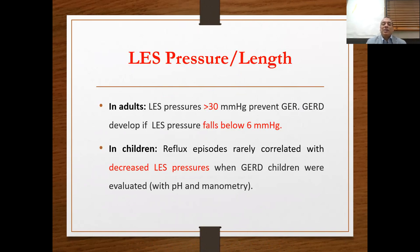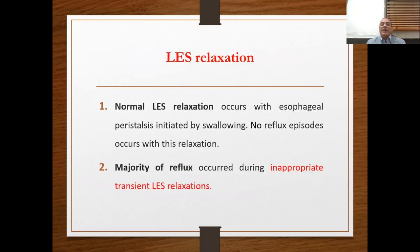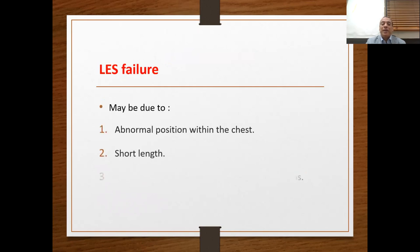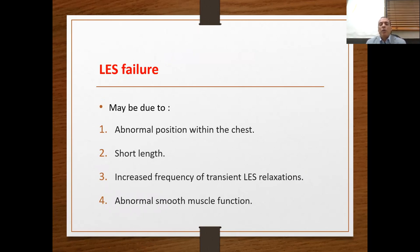Regarding LES pressure: in adults, pressure above 30 mmHg prevents reflux, while pressure below 6 mmHg causes reflux. In children, reflux episodes rarely correlate with decreased LES pressure on pH and manometry evaluation. Normal LES relaxation occurs with esophageal peristalsis during swallowing with no reflux reported. However, reflux is reported with inappropriate transient LES relaxation. LES failure may be due to abnormal position within the chest, short length, increased relaxation frequency, or abnormal smooth muscle function.